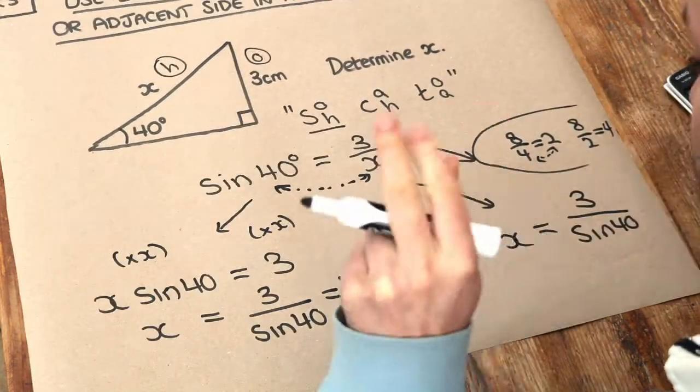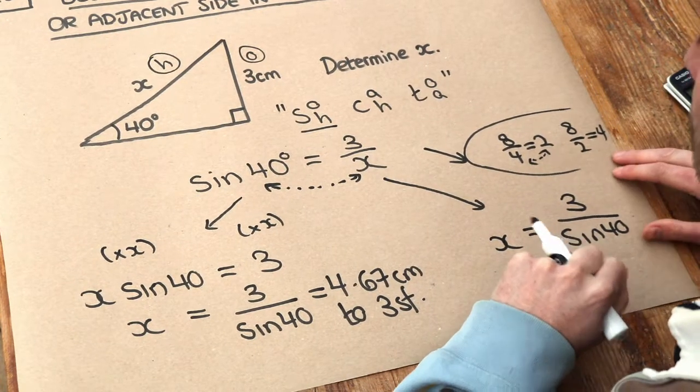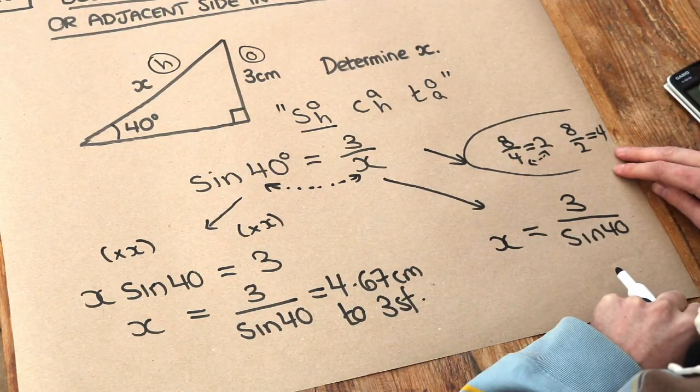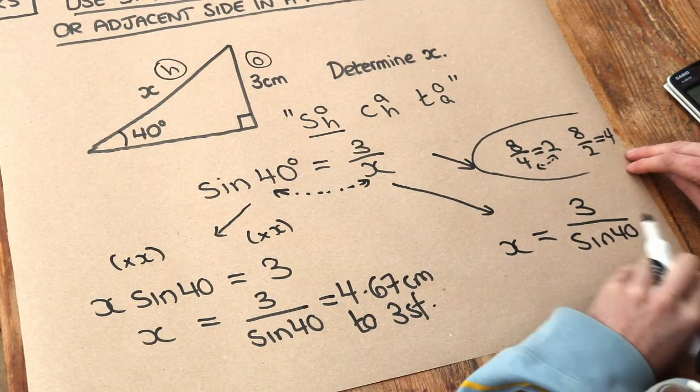So that's just a nice little trick, the swapsy trick, as I call it, which allows you to make x the subject quickly if the x is in the denominator of a fraction. But either way, we get 4.67 centimetres.